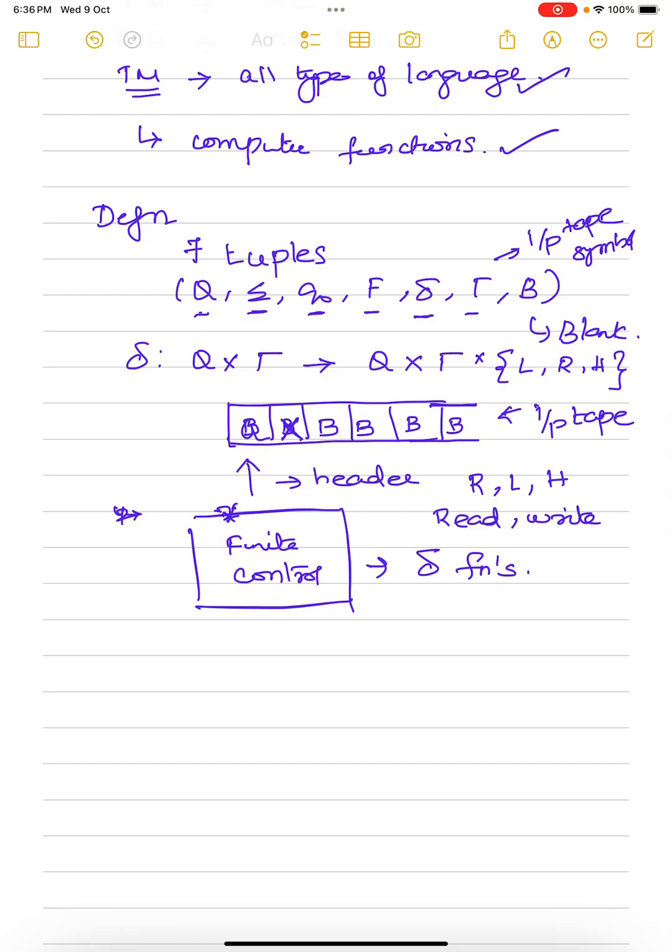So, the transition function is defined like from a current state. From the current state, all transition function will look into the current state and the current symbol in the input tape. Current symbol in the input tape.